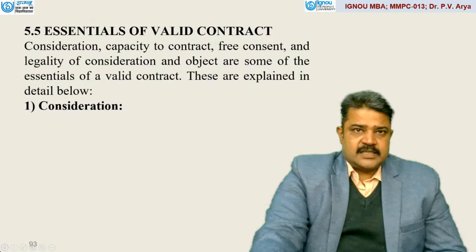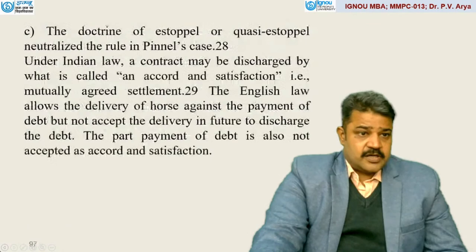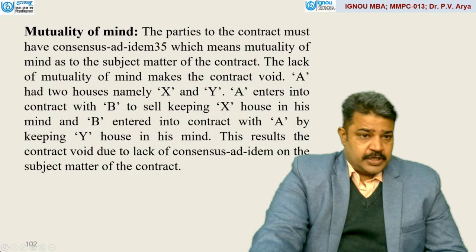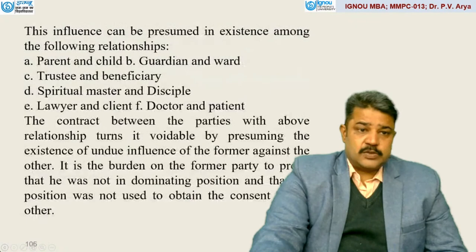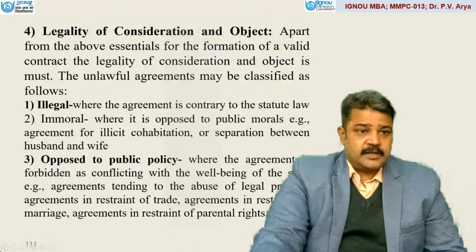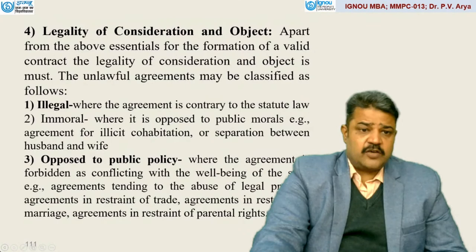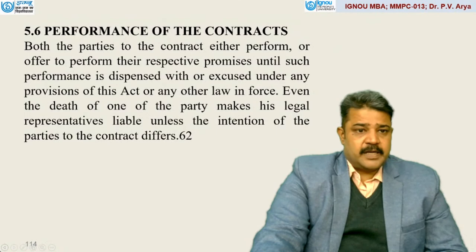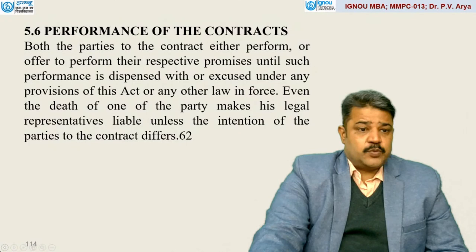There are certain essentialities of valid contracts — consideration, discharge of contract, the capacity under which it can be done. The mutuality of mind is also considered; free consent is required; no coercion, undue influence, misrepresentation, or mistake. As far as the legality of consideration and object is concerned, apart from the above essentials for the formation of a valid contract, legality of consideration and object is a must. The unlawful agreements may be classified as illegal, immoral, or opposed to public policy. The performance of contract: both parties to the contract either perform or offer to perform their respective promises unless such performance is dispensed with or excused under any provision of this act. Even the death of one of the parties makes his legal representative liable unless the intention of the parties to the contract differs.